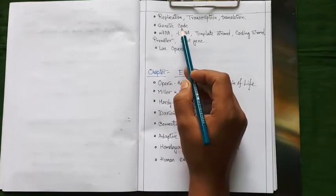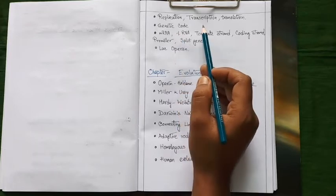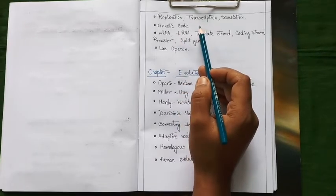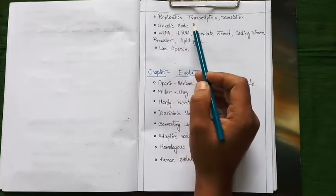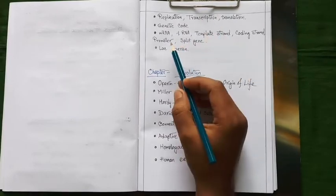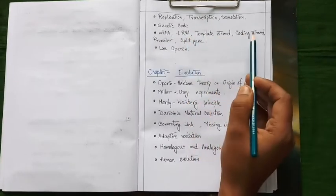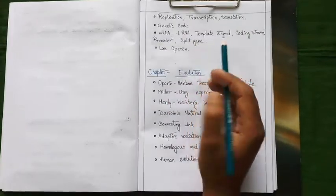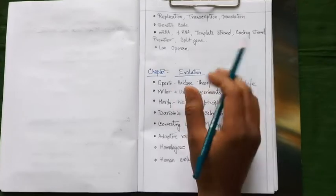Our next topic is genetic code. You need to know the definition of genetic code, different characteristics or properties of genetic code. And you can also expect another kind of question like what do you mean by wobble hypothesis. So you have to prepare that question for genetic code section. Next, you have to prepare some notes on mRNA, tRNA, template strand, coding strand, promoter, split gene. You may certainly expect any one note from this entire section.